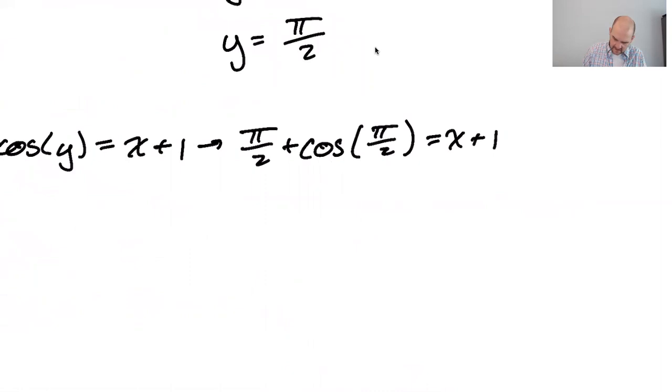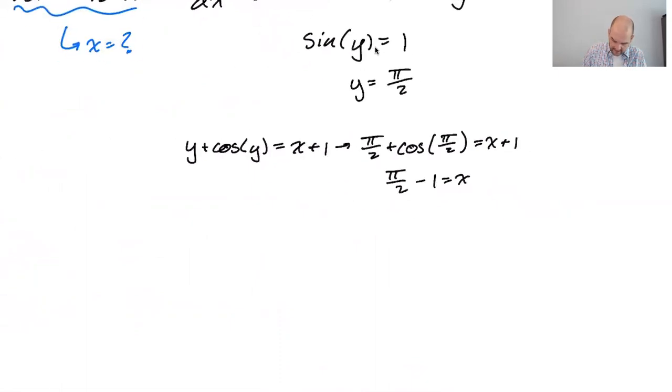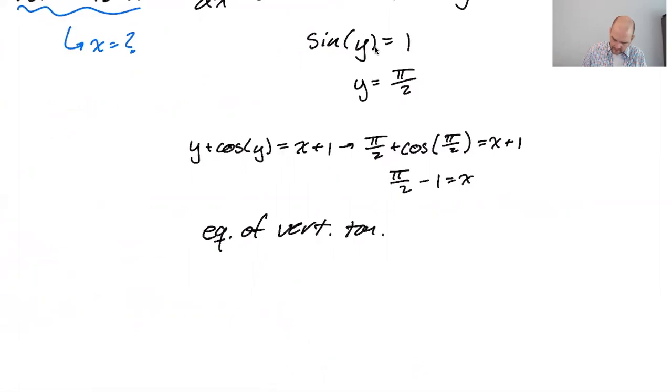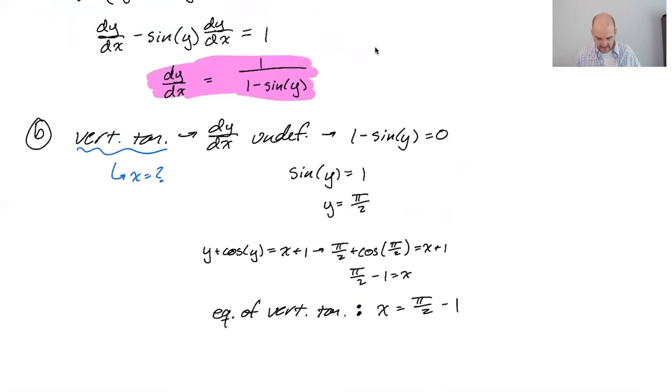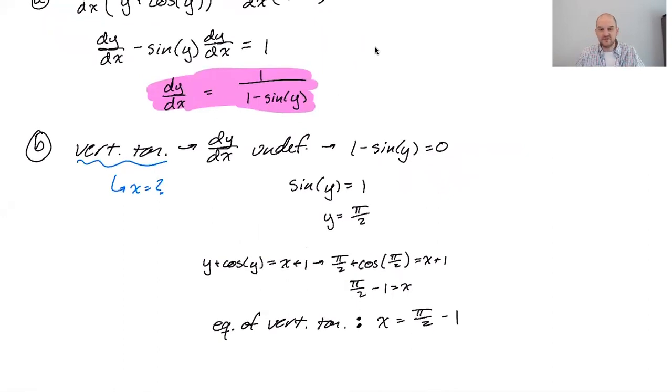which means the cosine of π/2 is 0. So π/2 minus 1 equals x. So the equation of the vertical tangent is x equals π/2 minus 1. That's your vertical tangent line. So it's the only place on the interval where y is between 0 and 2π, where the derivative is going to be undefined.